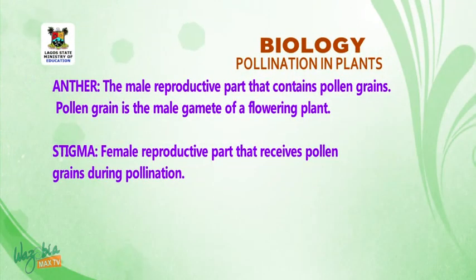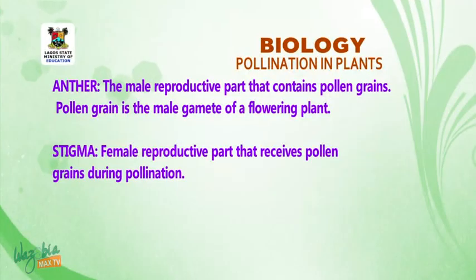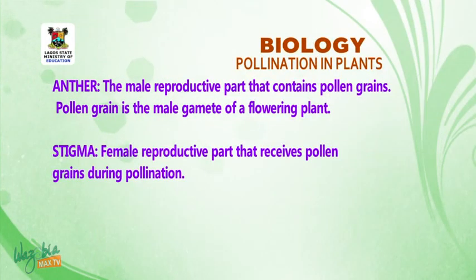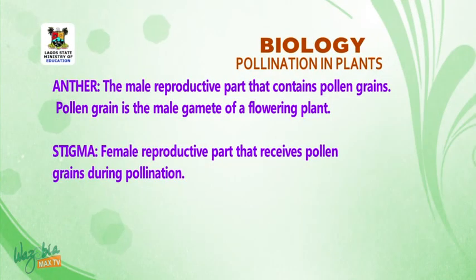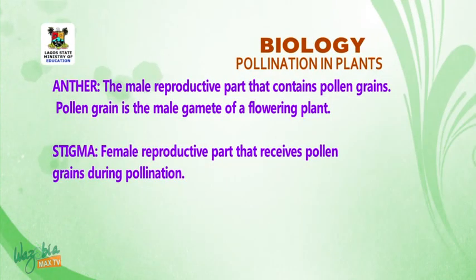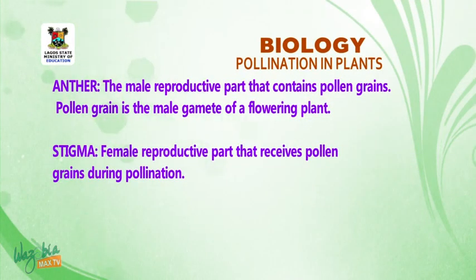The anther contains pollen grains. Pollen grains are the male gamete of a flowering plant. Stigma is the female reproductive part that receives pollen grains during pollination.